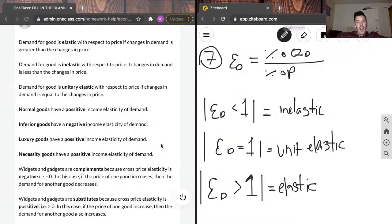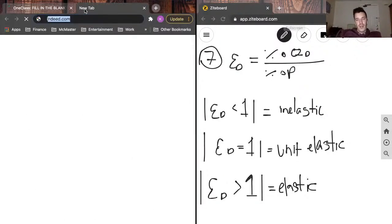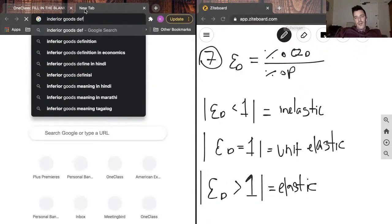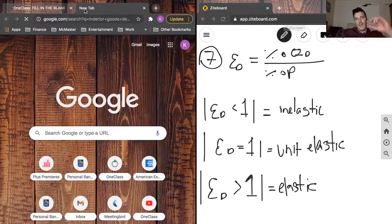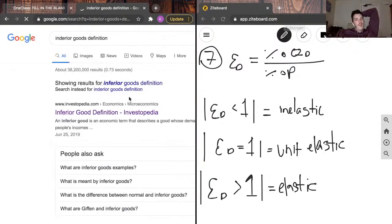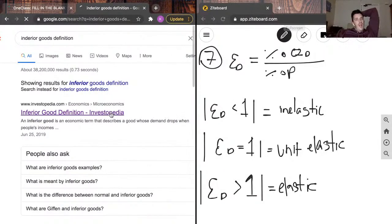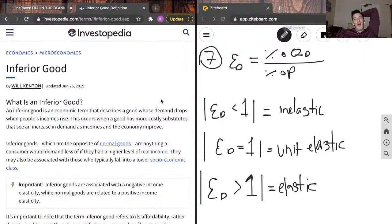Normal goods have a positive income elasticity of demand. Inferior goods have a negative income elasticity of demand. Inferior goods are when demand drops when incomes rise. So, this is for things like Mr. Noodles and stuff you eat as a broke college student, but then you start working. You get a taste of that good life, and you don't want to go back to living off pizza pockets and Mr. Noodles and things of that nature.